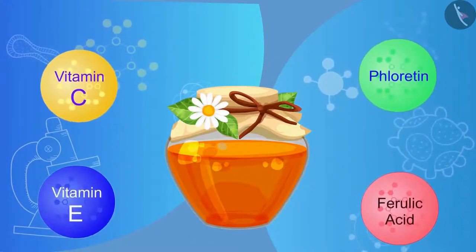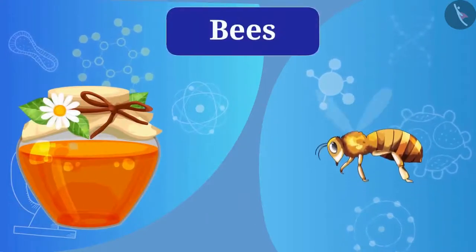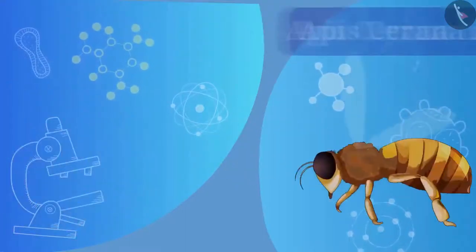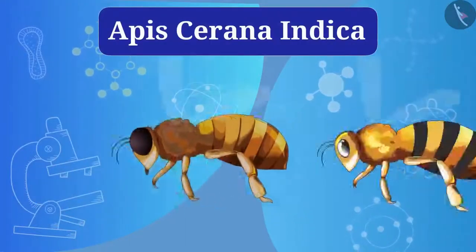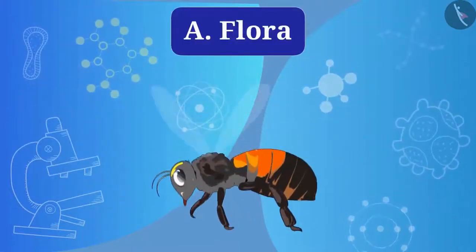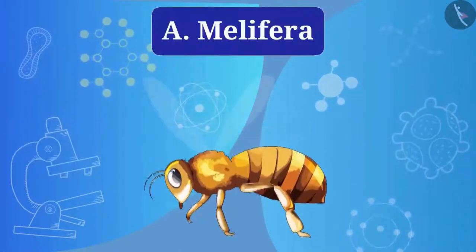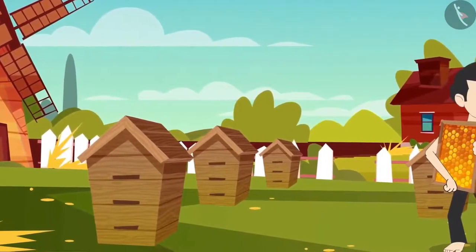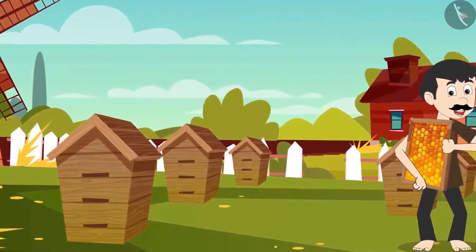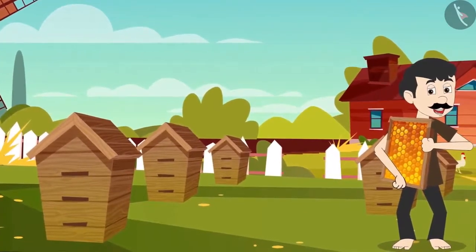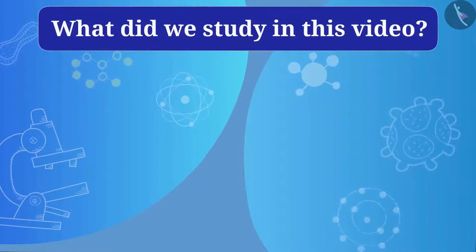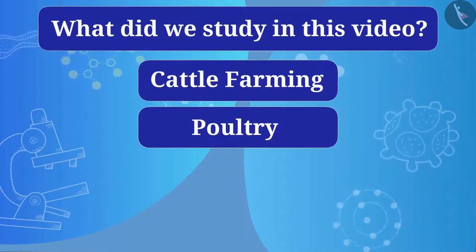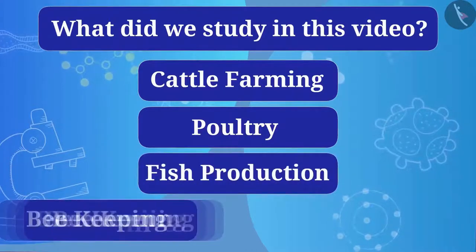To increase the production of honey, bees are also taken care of. Different types of bees are used, such as Apis cerana indica, Apis dorsata, Apis florea, and Apis mellifera. Since beekeeping requires less investment, farmers also consider it as an additional source of earning. In this video we studied cattle farming, poultry farming, fish production, and beekeeping.